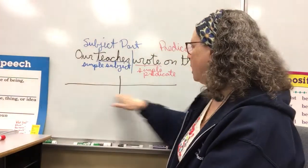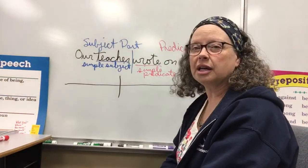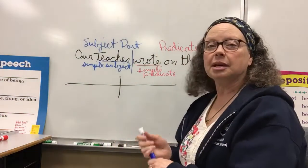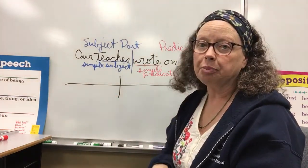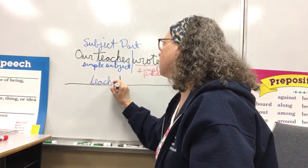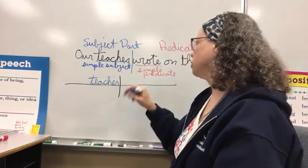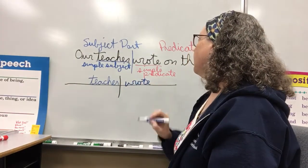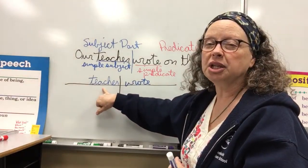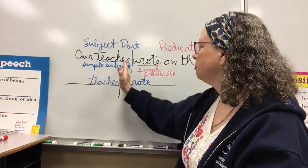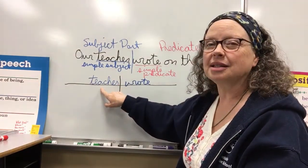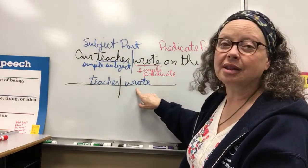Now this line with the dividing line in the middle — that is our diagram. On our diagram, we write the simple subject in this part and the simple predicate in this part. So 'teacher' would go right here, and then what did that teacher do? The teacher 'wrote.' You have just diagrammed that sentence by putting the simple subject in the front part, dividing it between the subject and predicate, and putting the simple predicate right there. This is who or what the sentence is about, and this is what that who or what did.